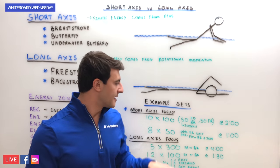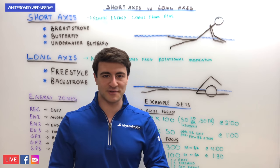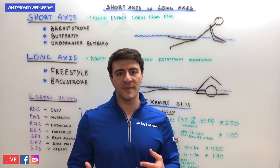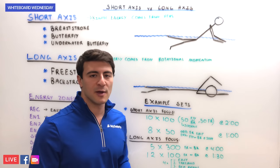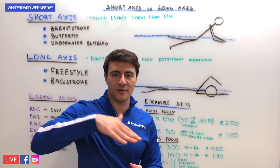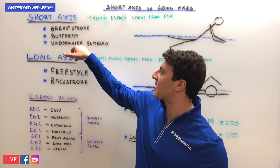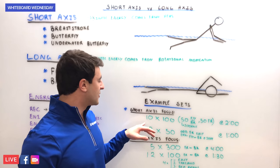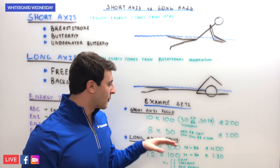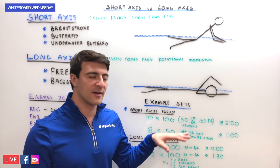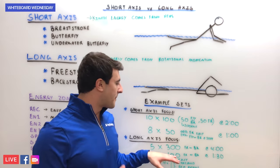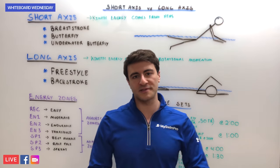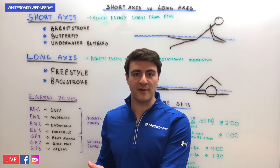If you look at the best breaststrokers in the world, most likely they're not doing 5x300 breaststroke. Compare that to the best backstrokers, who will do a considerable amount of backstroke training. One exception is short course pools, where you might do shorter high-intensity underwater work — but the underwater dolphin kick is really a short axis movement because you're using your hips to drive kinetic energy. So even if you're a backstroker focused on underwaters, the backstroke itself may be aerobic-focused, but the underwater dolphin kick component is short axis and should be trained at higher intensity.